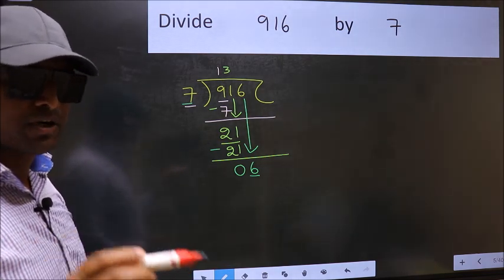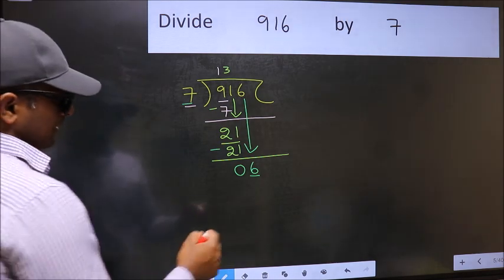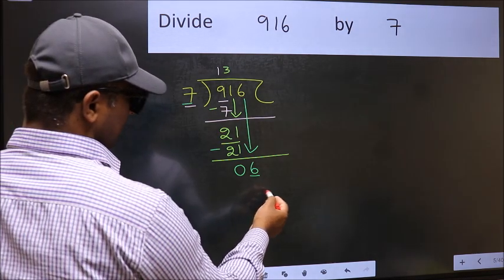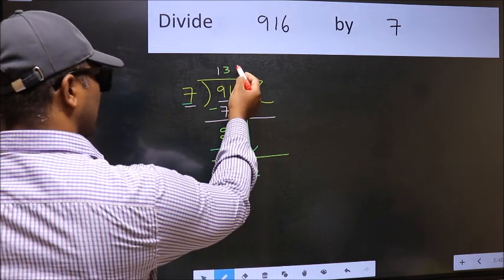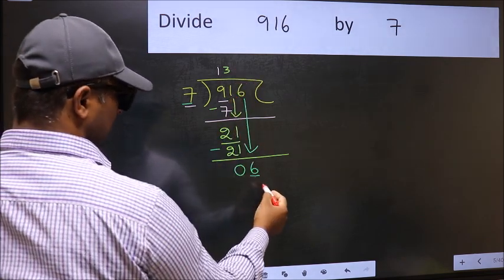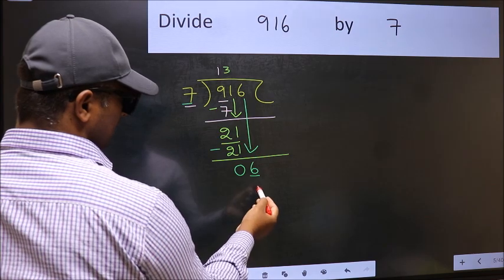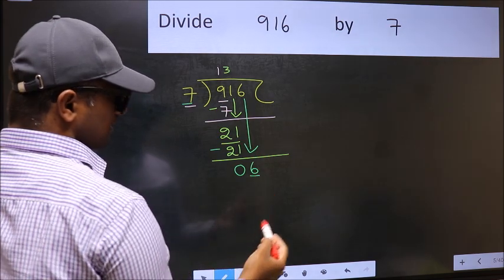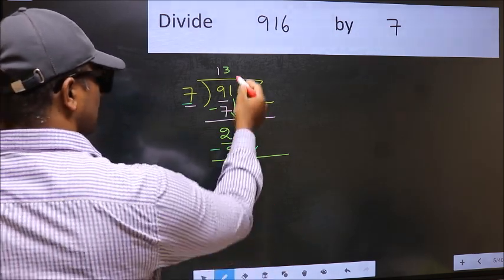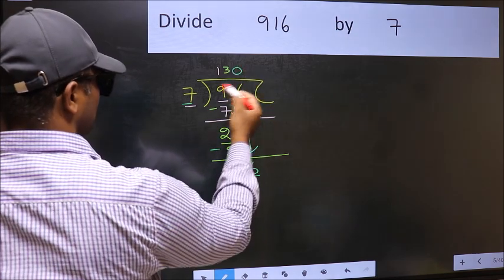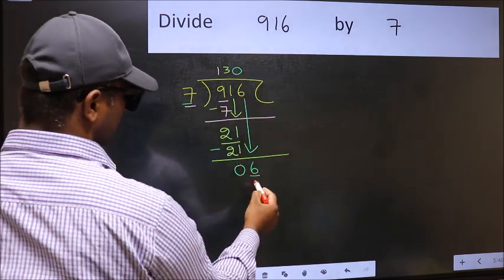Instead, what you should do is: which number should we take here? If I take 1, we will get 7, but 7 is larger than 6. So we should take 0. 7 into 0 equals 0.